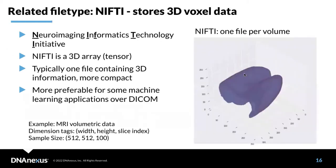NIfTI stores 3D voxel data — it's a 3D array, also called a tensor. The key difference from DICOM is that NIfTI is represented as one file per volume, making it more compact and less complicated than DICOM. It is also more preferable for some machine learning applications over DICOM.